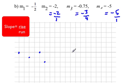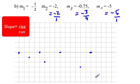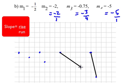For the next line, we have a rise of negative three, so we go down three and a run of four. For the last line, we have a rise of negative five, so we go down five and over one. It's easy to identify which line is the steepest — it's obviously negative five, the most negative number.